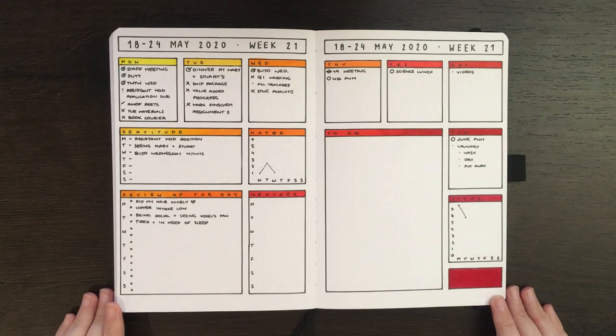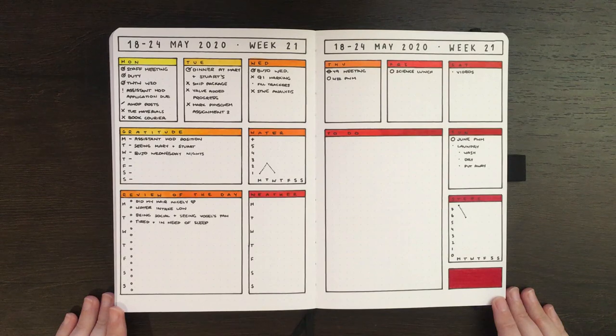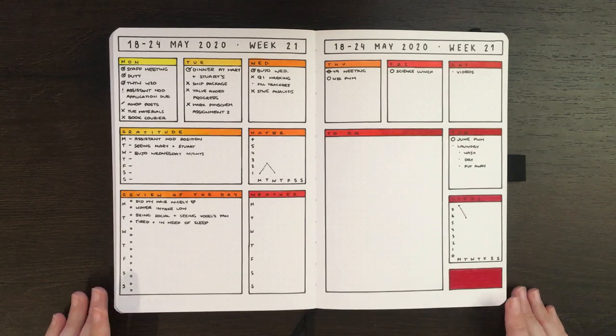Hello again team, it's Jess or Joshi Curran and welcome back for my week 22 plan with me. Today I'm going to be setting up for the 25th through to the 31st of May, but before we get into that, as per usual we're just gonna have a look at how this week was going.